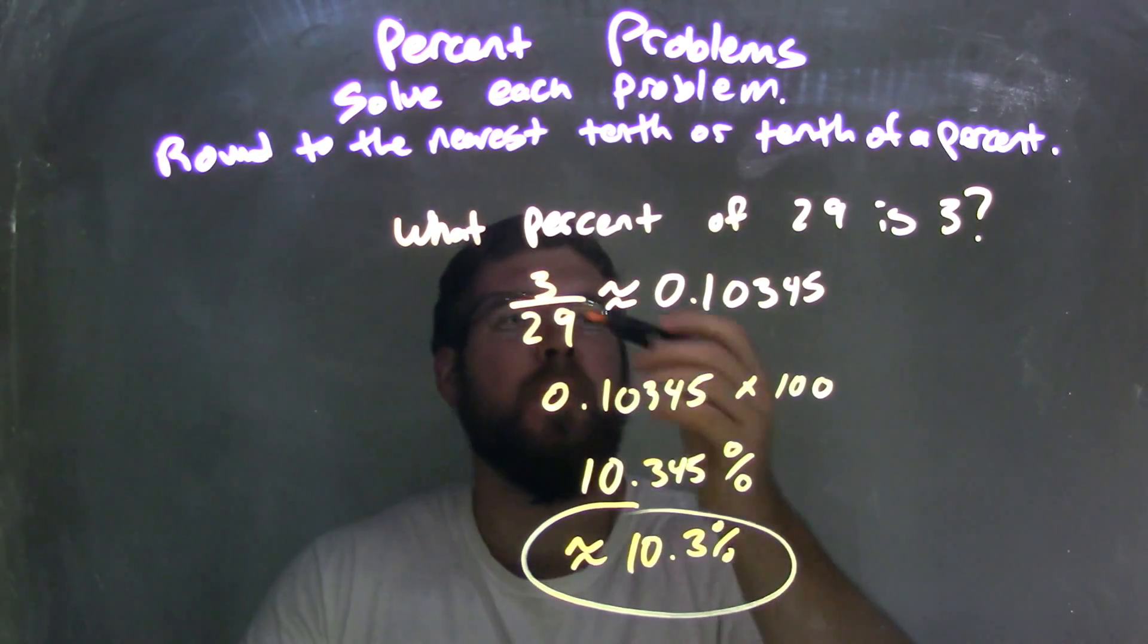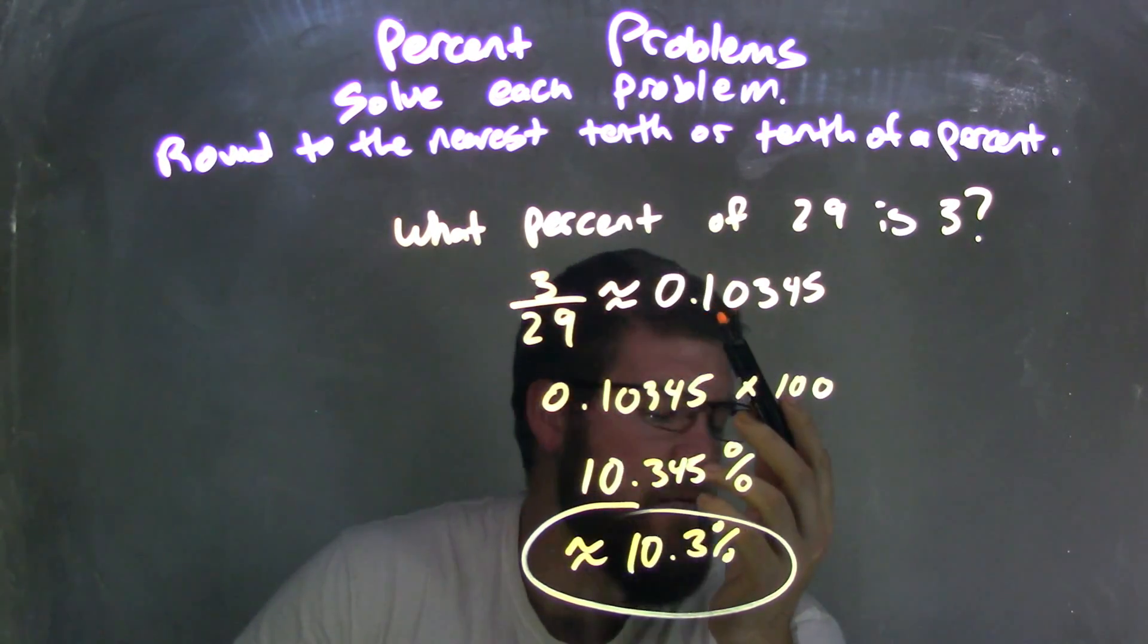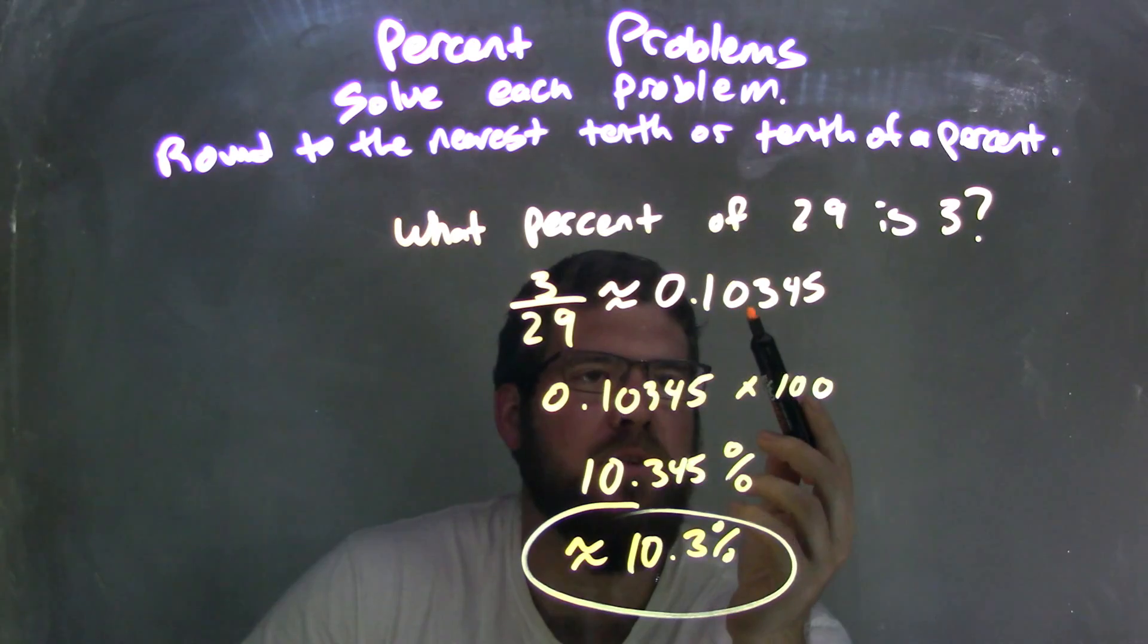We're asked the question, what percent of 29 is 3? I took 3, divided 29 by it, and it gave me an approximate decimal of 0.10345.